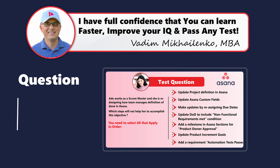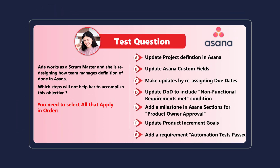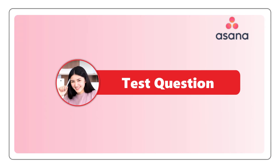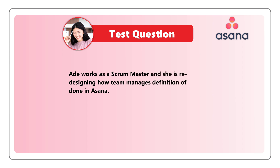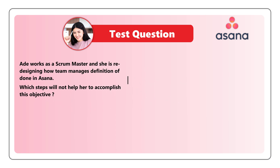Here's one of the advanced questions we saw on the test recently. Eddie works as a scrum master and she is redesigning how the team manages definition of done in Asana. Which step will NOT help her accomplish this objective? You are presented with seven different choices and need to select all that apply in order.